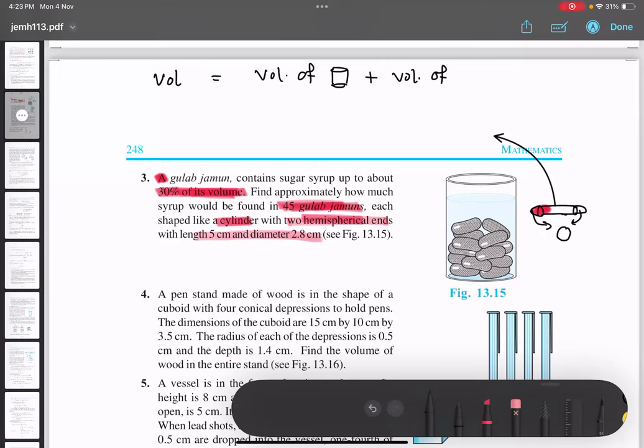I'm using the word sphere, not a circle. I'm not drawing because it becomes confusing. Now please calculate quickly volume of cylinder and volume of sphere. I'll just explain the procedure, you do it yourself. So this is step number one, this is volume of one gulab jamun.